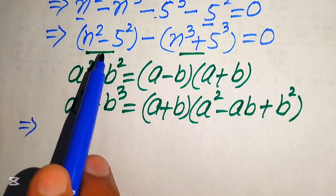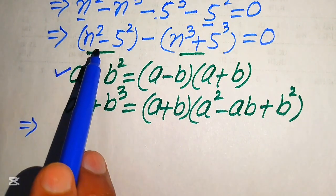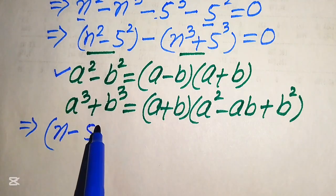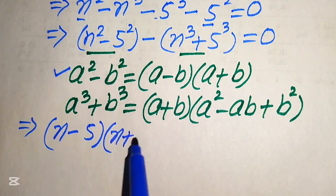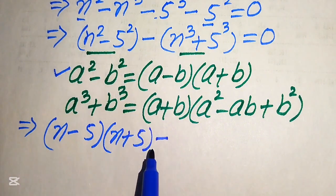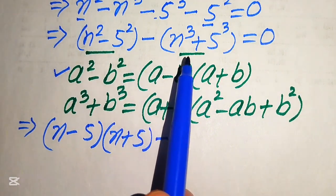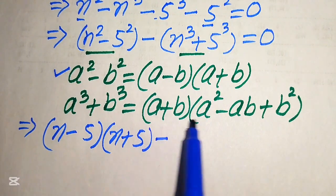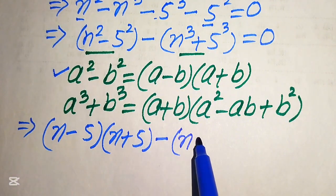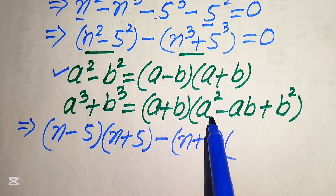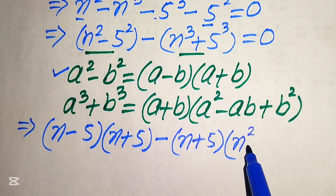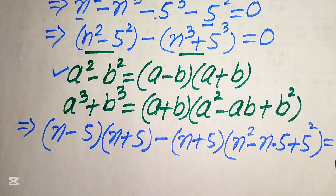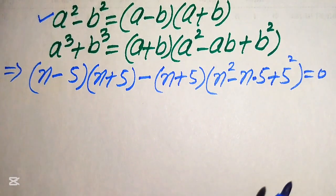Expanding the first factor using the difference of squares formula with a equals n and b equals 5, we get (n minus 5)(n plus 5). Applying the sum of cubes formula with a equals n and b equals 5, we get (n plus 5)(n squared minus 5n plus 25). This whole equation equals zero.